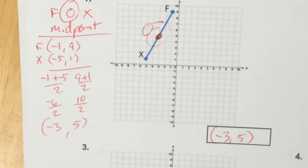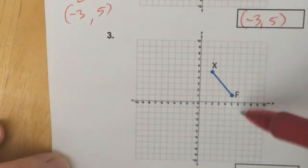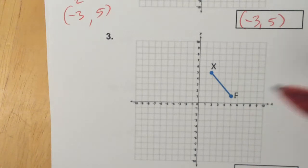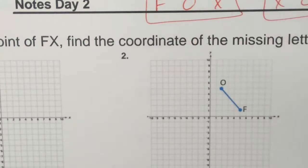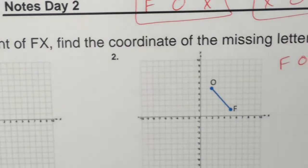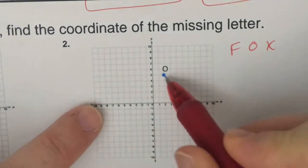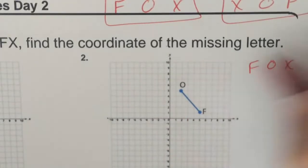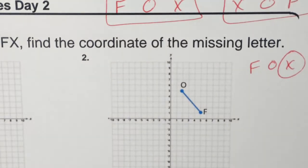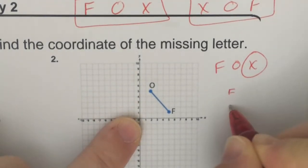Now let's keep going down and do all the odd problems. So number 2 — we have F, O, and we're looking for X. So F, O, X. We're looking for the missing endpoint. For that one, you just continue the pattern. So F, O, and X.